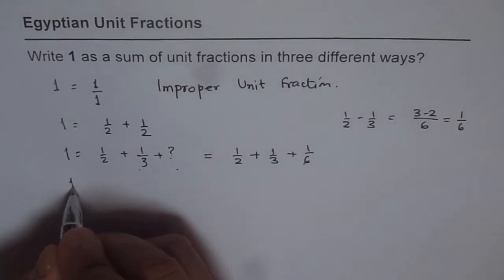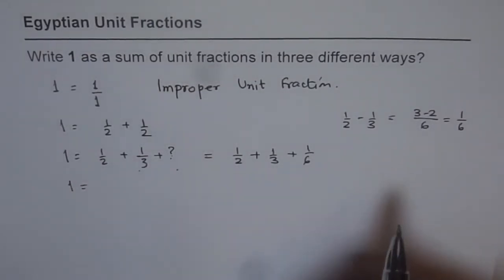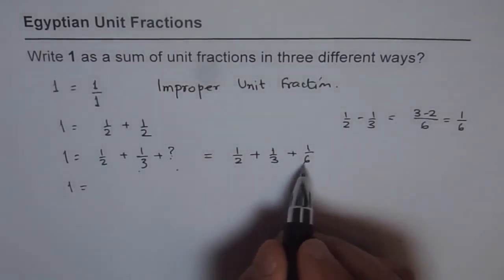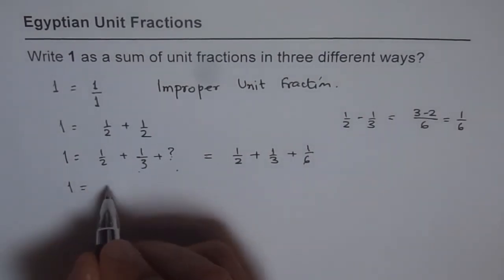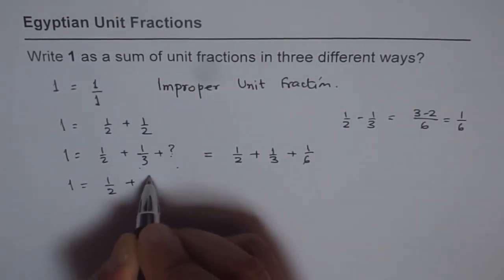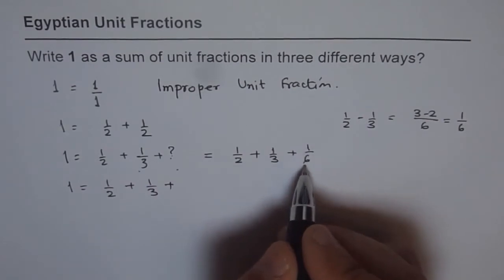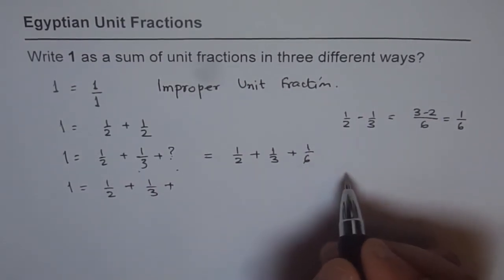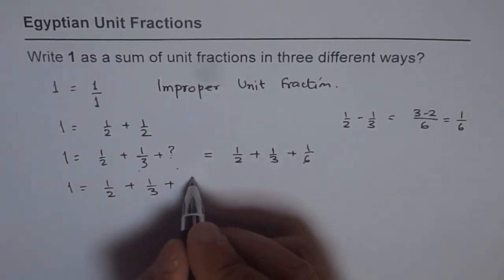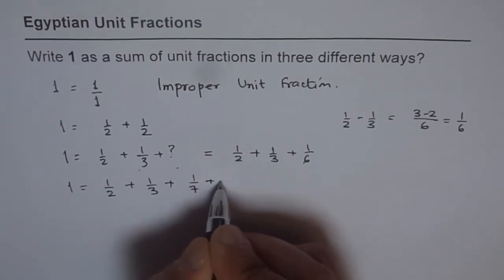Now, we'll write 1 as sum of more unit fractions. We can continue this process. So what we will do is, we'll write this as 1 plus 1 over 3 plus, now we'll split 1 over 6 into two numbers. So it could be written as 1 over 7 plus something.